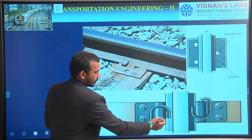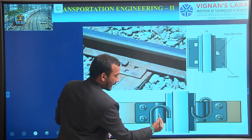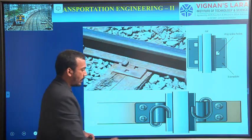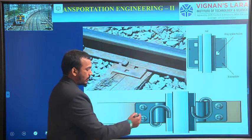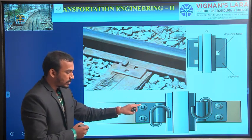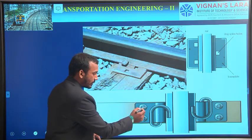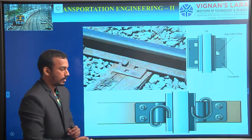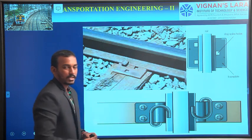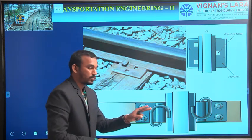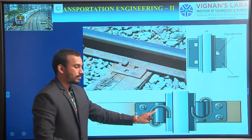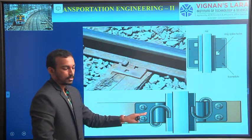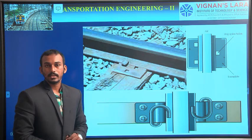Let's see the practical image. This is an elastic spike — the rails are connected to the bearing plate using elastic spikes. Here we see two more holes. What type of screws are we using here? Circular with square cross-section — those are screw spikes. Screw spikes are used to connect the bearing plate to the sleepers. So here we are using two types of fasteners: elastic spikes to connect the rails to the bearing plate, and screw spikes to connect the bearing plate to the sleepers.